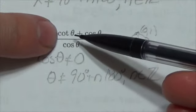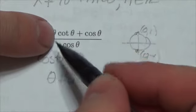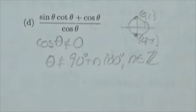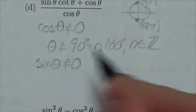Cotangent is cosine over sine, so because that produces a sine ratio in the denominator, we also have to include that sine of theta cannot equal zero.